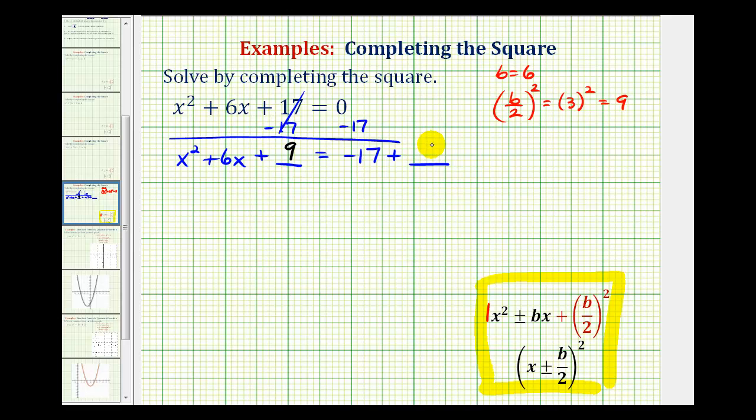So now we're going to factor this trinomial and combine the terms on the right. So let's factor this into two binomial factors first. Notice the right side is going to be negative 17 plus 9. That's negative 8.